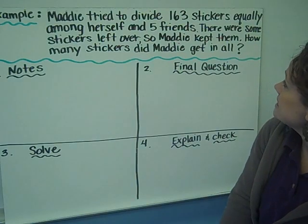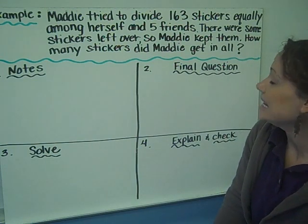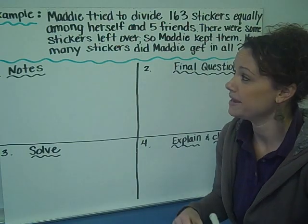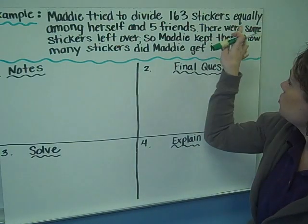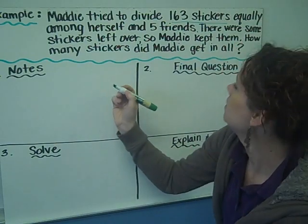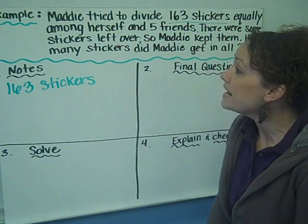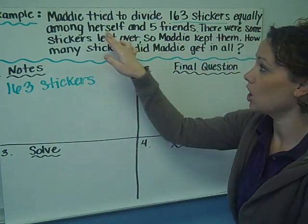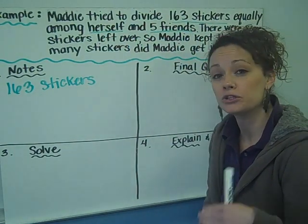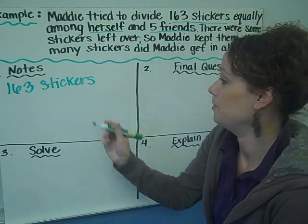Here's our first example problem: Maddie tried to divide 163 stickers equally among herself and five friends. There were some stickers left over, so Maddie kept them. How many stickers did Maddie get in all? Taking notes of the important information: Maddie has 163 stickers. She's sharing among herself and five friends — very important — so there are six people total sharing stickers.